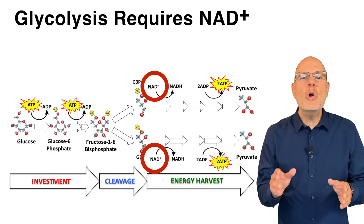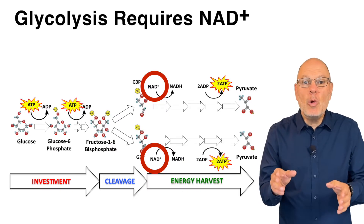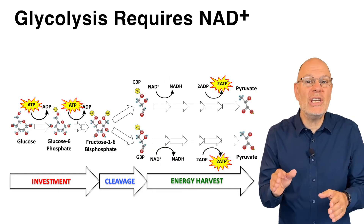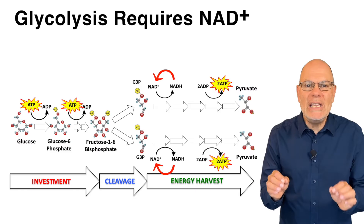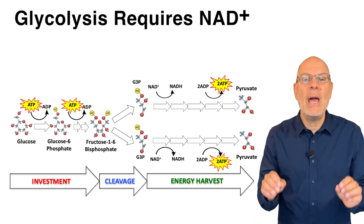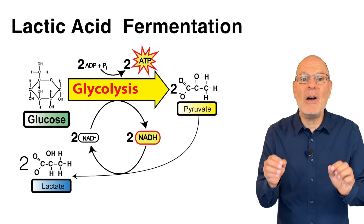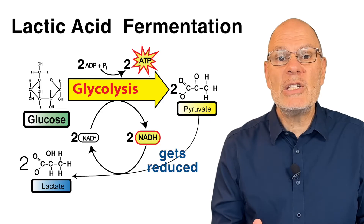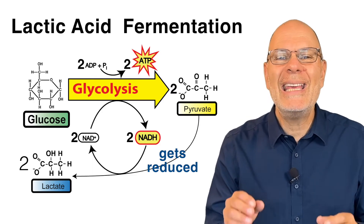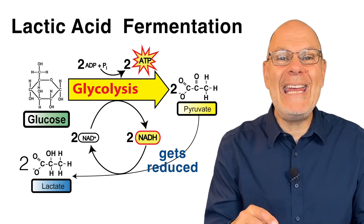Here's how that works. Note that NAD+ is an input for glycolysis — it's required for glycolysis to happen. So for glycolysis to continue during anaerobic respiration, there needs to be a way to convert the mobile electron carrier NADH back to NAD+. To do this, cells carry out lactic acid fermentation. In lactic acid fermentation, pyruvate, which is the byproduct of glycolysis, gets chemically reduced.